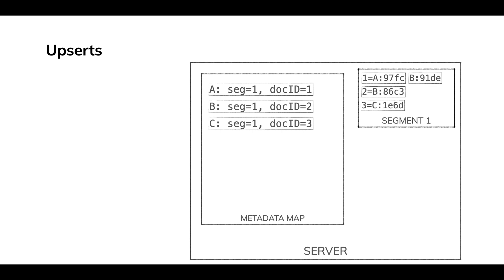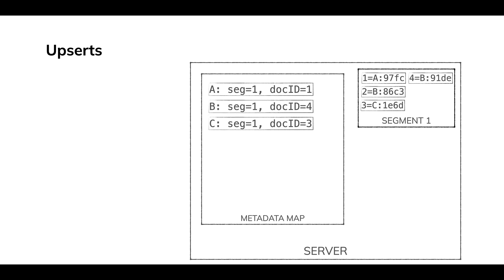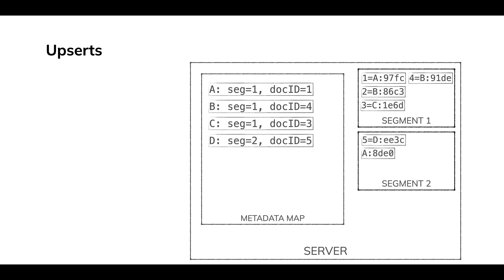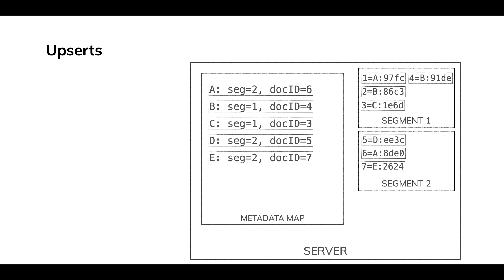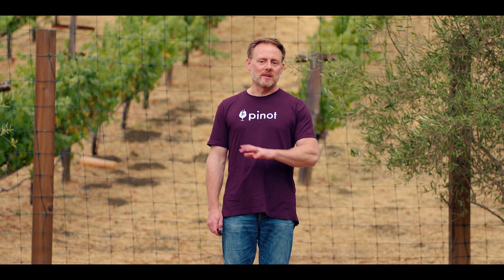Here's B — B shows up again. We write that to segment one. We don't overwrite the first time it was there; we're appending to a log. So we write that, it gets a new document ID, and we update the metadata map with that new document ID. Now primary key B is still segment one, but it's doc ID four — the new version of B. That's what the metadata map does. We update A and now A is written to segment two, so it has a new doc ID and is being written to a new segment. These things keep happening as we keep updating our metadata map, and that is the fundamentals of upserts.